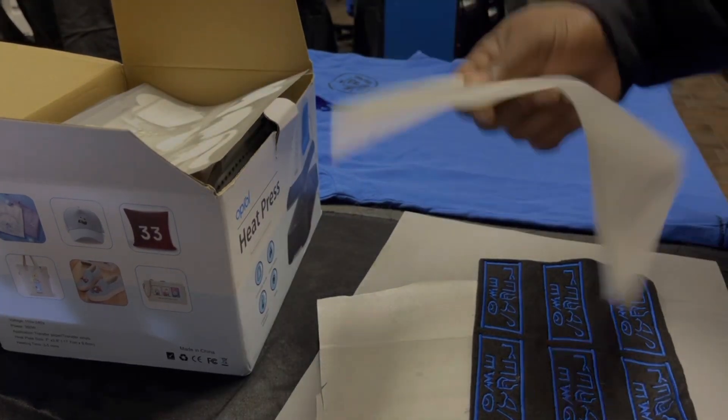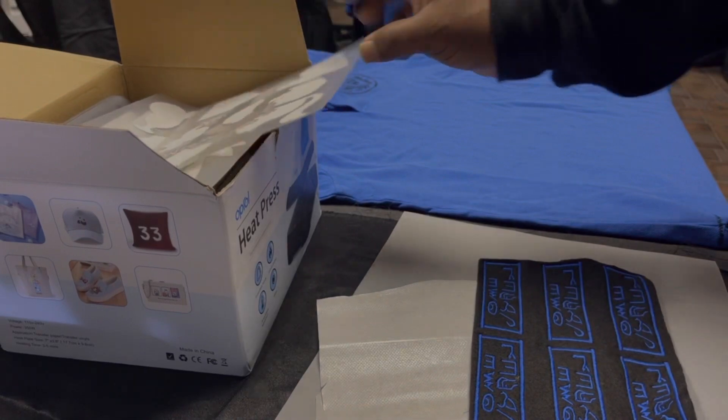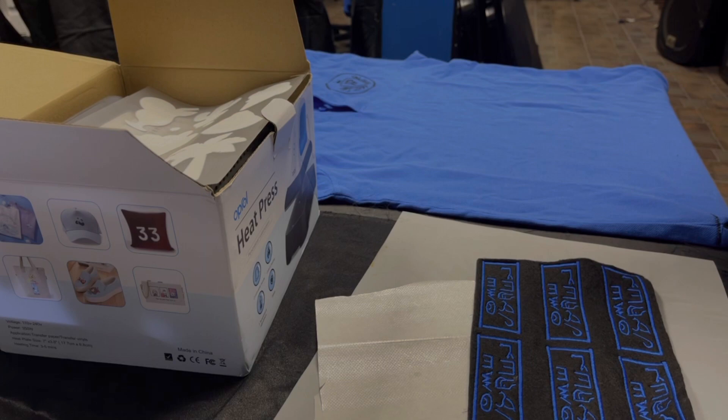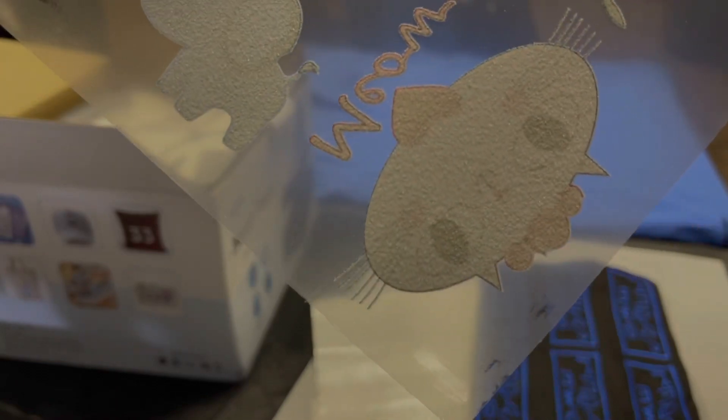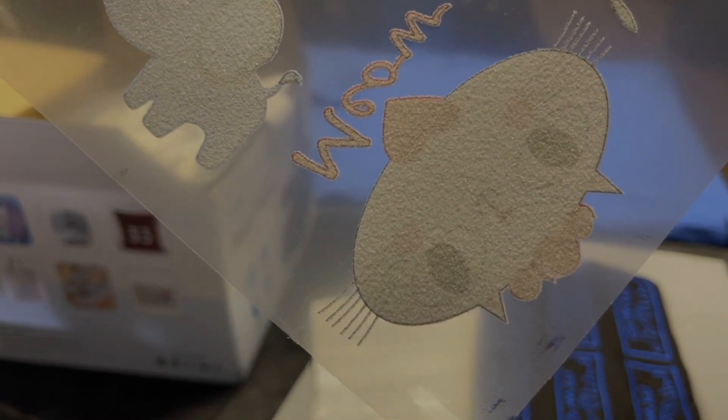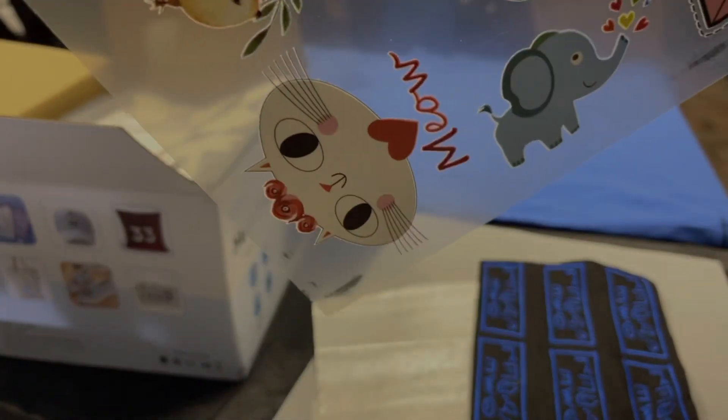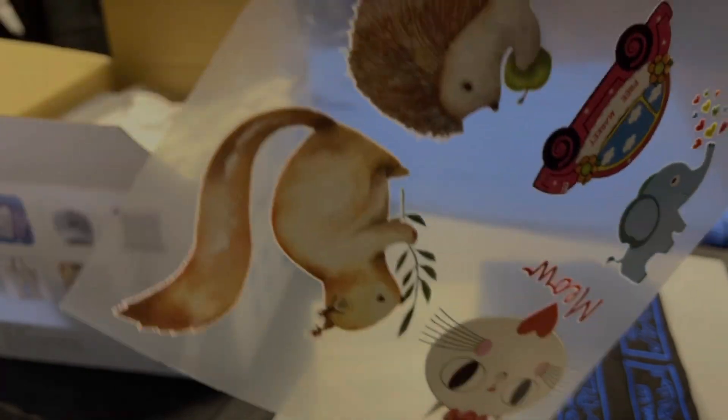Another little Teflon sheet. Look at this, I want you to look at this. This is DTF, you can see the crystals on there. This is DTF printer.